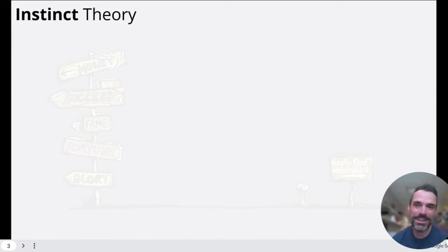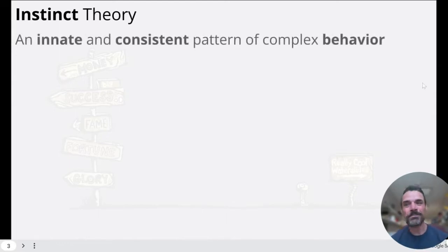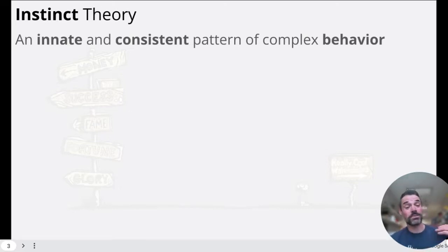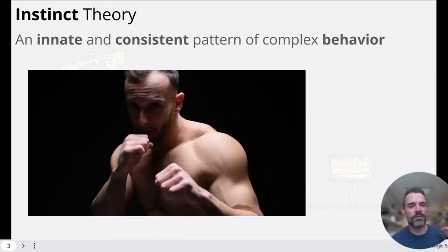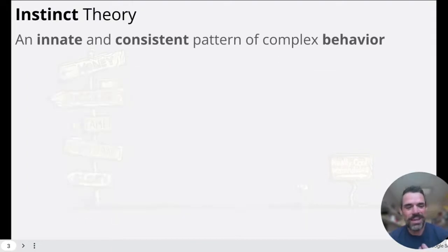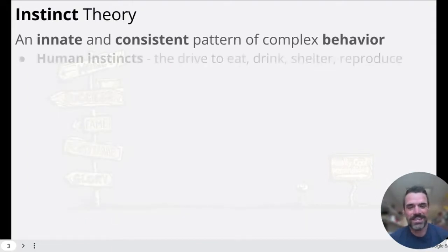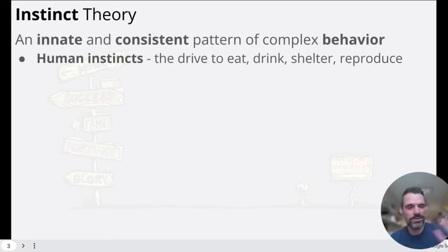Our first big theory is the instinct theory — innate and consistent patterns of complex behaviors. These are things that we're born with; they're inside us. When we're born, we don't have to learn them. Fight or flight is a good example. In humans, we have that instinct ready to go. Human instincts include the drive to eat, drink, seek shelter, and reproduce.